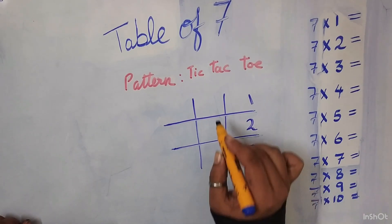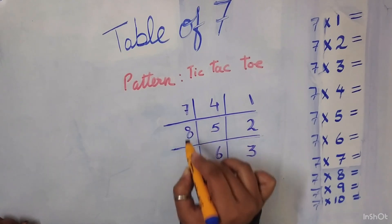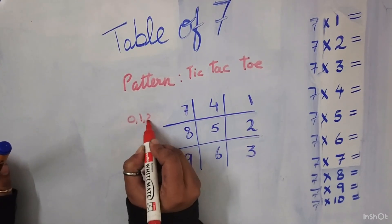And here we will start from this corner: 1, 2, 3, 4, 5, 6, 7, 8, 9. Here the magic numbers are 0, 1, 2.